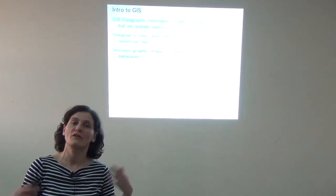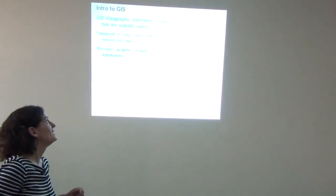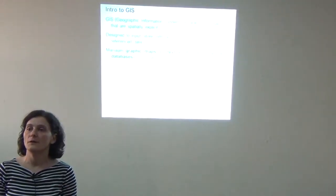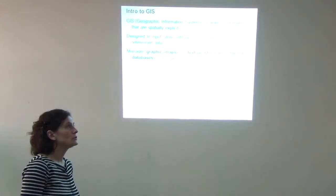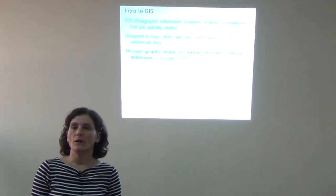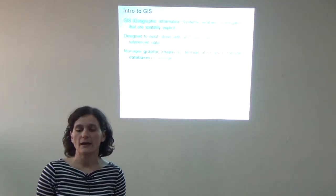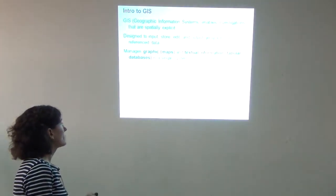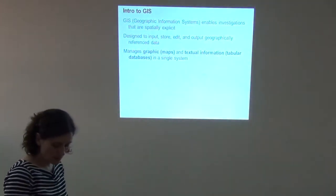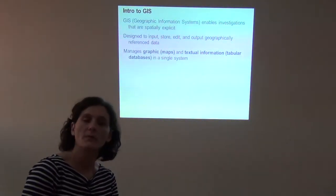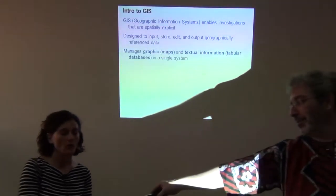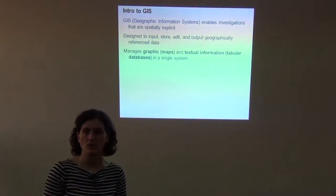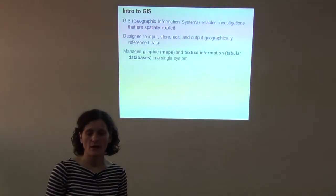For those of you who have already used GIS, this will be more of a refresher, or you can correct me if I'm wrong. So what is GIS — Geographic Information Systems? It's a platform that allows us to do analysis that are spatially explicit. We can input data, store data, edit data, and output data that is geographically referenced. We can manage either maps or textual information, meaning attributes tables, in a single system. This is the advantage of having GIS — both spatial information and textual information in one system.